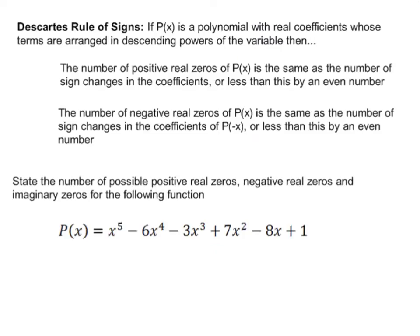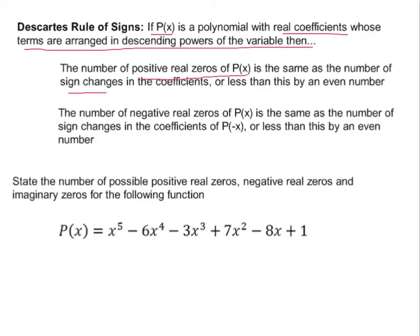To help us find solutions, we're going to use Descartes' Rule of Signs, because sometimes we'll have functions we can't clearly factor. For a polynomial p of x with all real coefficients and terms arranged in descending powers, the number of positive real zeros is the same as the number of sign changes in the coefficients, or less than it by an even number.